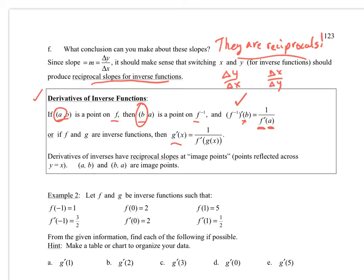Now here's where people get messed up a little bit though. You get g prime of x equals 1 over f prime of g of x. Well, notice that x is the x coordinate on g. Well, that means that g of x is going to be the y coordinate on the inverse. That's if f and g are inverse functions of each other. So it does make sense. You just got to get your head around it. Derivatives of inverses have reciprocal slopes at image points, points reflected across y equals x. (a,b) and (b,a) are our image points.